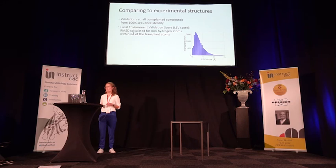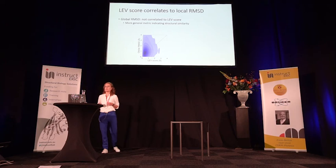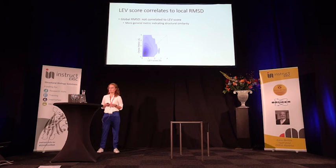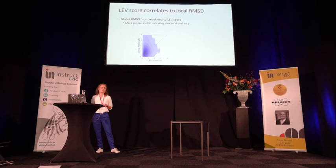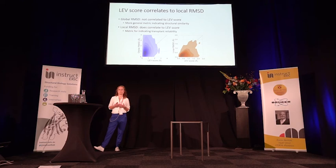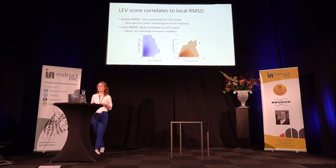Therefore, we looked at the correlation with measures we calculate for each transplant. If we plot the global RMSD versus the LEV score, we see no correlation — indicating we cannot use global RMSD as a general metric for transplant reliability. However, when we plot the local RMSD — the RMSD of the alignment of the binding site — versus the LEV score, we see a correlation, indicating we can use this metric as an indication of transplant reliability.